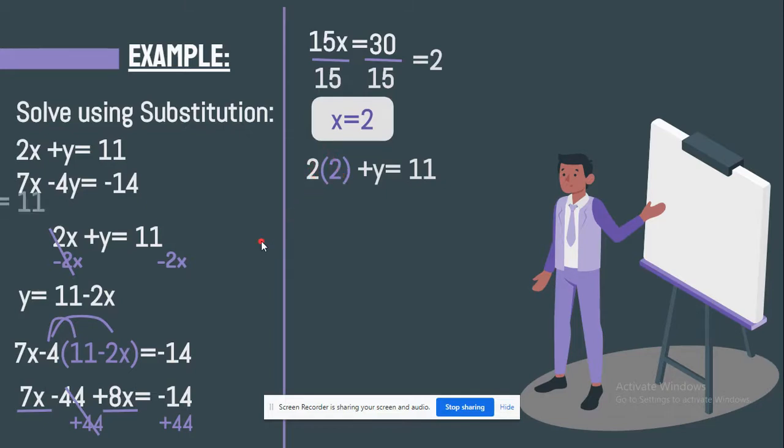2 times 2 is actually 4. And then you're going to write down the rest of the equation. So 4 plus y equals 11.